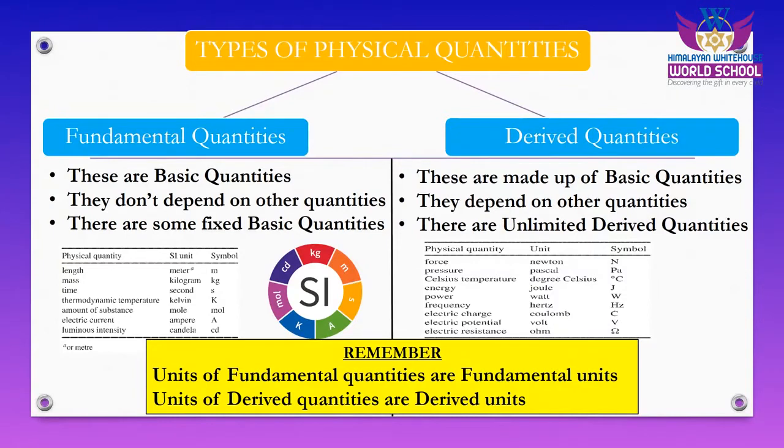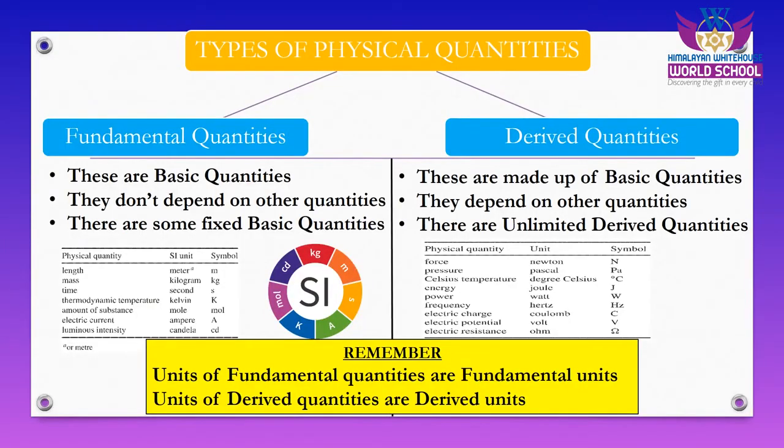There are two different types of physical quantities: fundamental quantities and non-fundamental quantities. Fundamental quantities are the basic quantities — they are non-dependent on others. Just like in English literature we have alphabets that are independent of each other, but a word is made up of different letters.